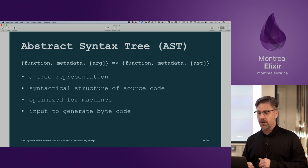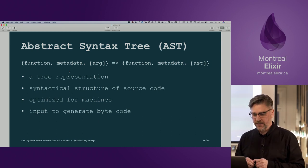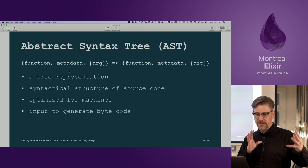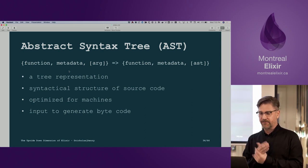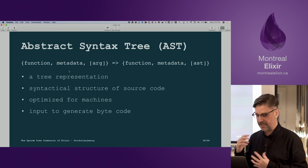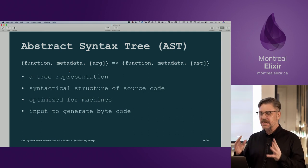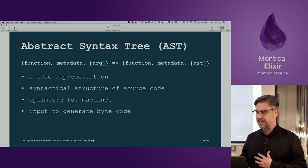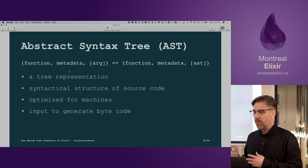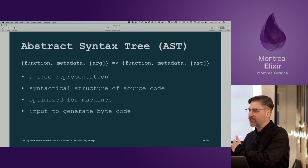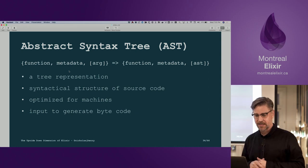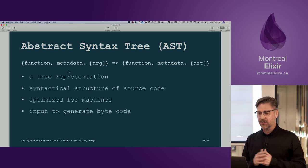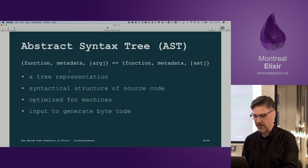We have this tree structure for the internal data structure used to generate bytecode. This is known as an abstract syntax tree. The three-element tuple has a function, metadata, and a list of args — or more ASTs. This forms the syntactical structure of our source code.